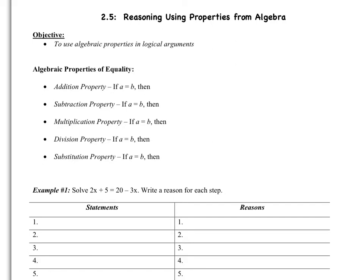The first property is called the addition property. If A equals B, then A plus C is equal to B plus C. So that just means you can add the same number to both sides. The subtraction property: if A equals B, then A minus C is equal to B minus C. You can subtract the same number from both sides.